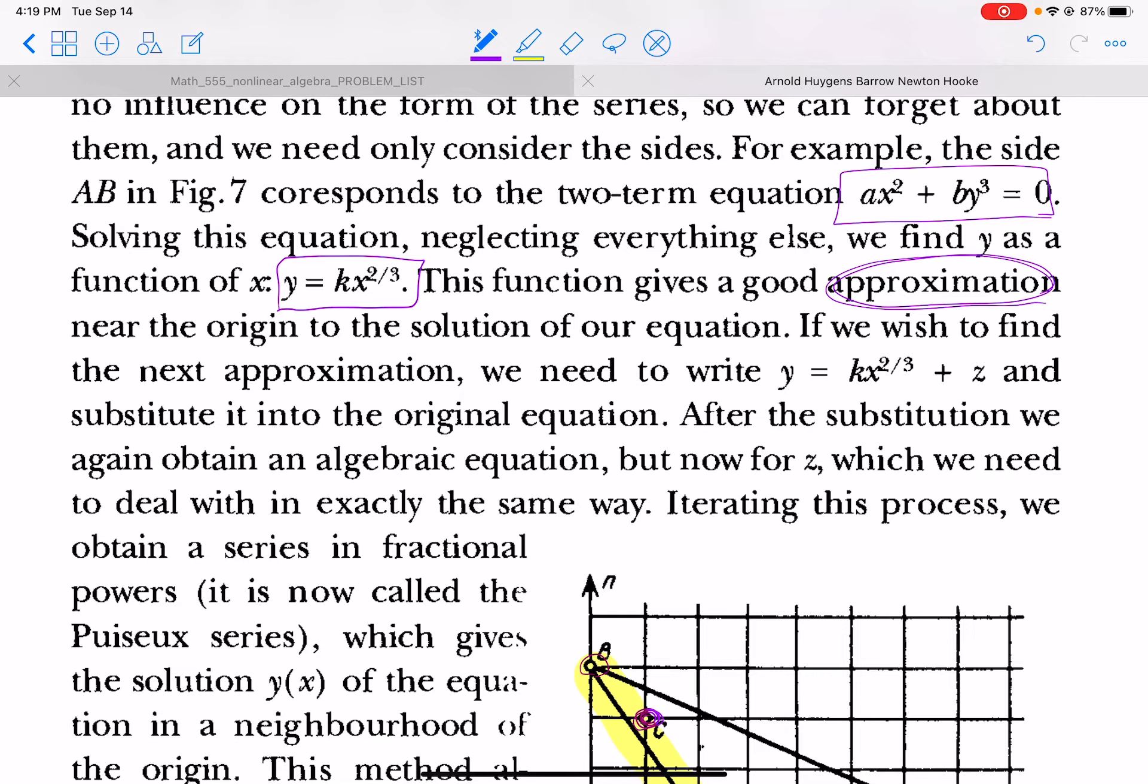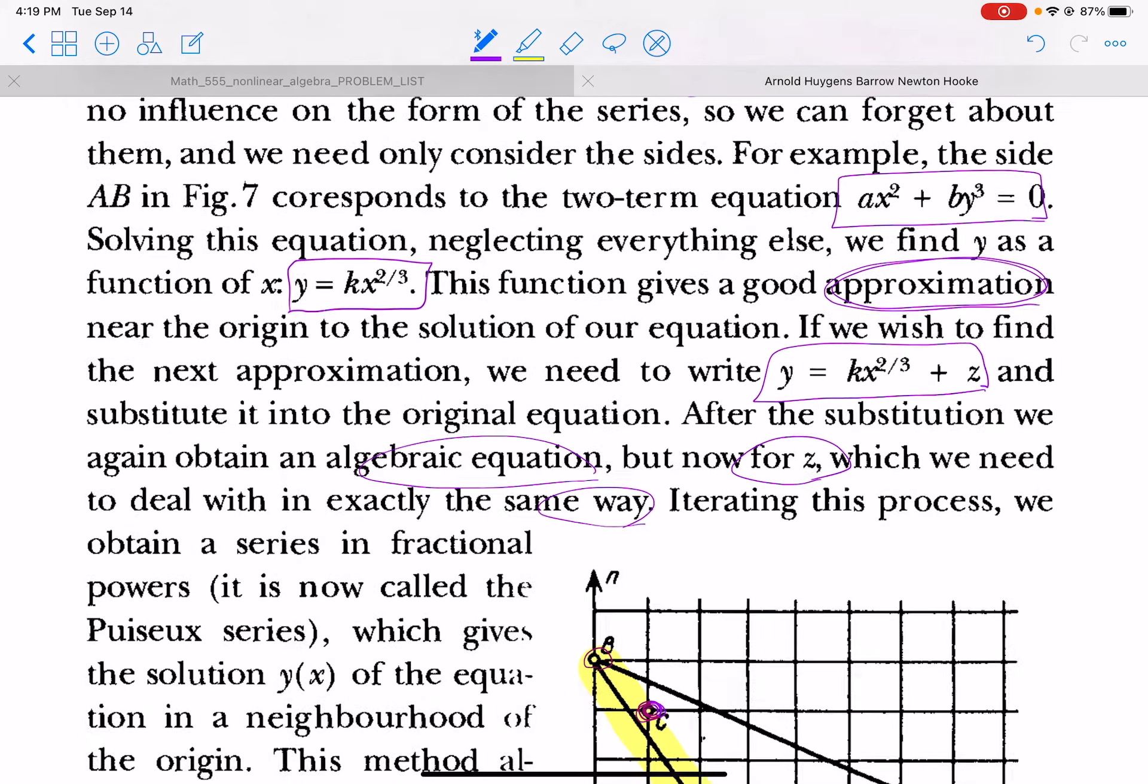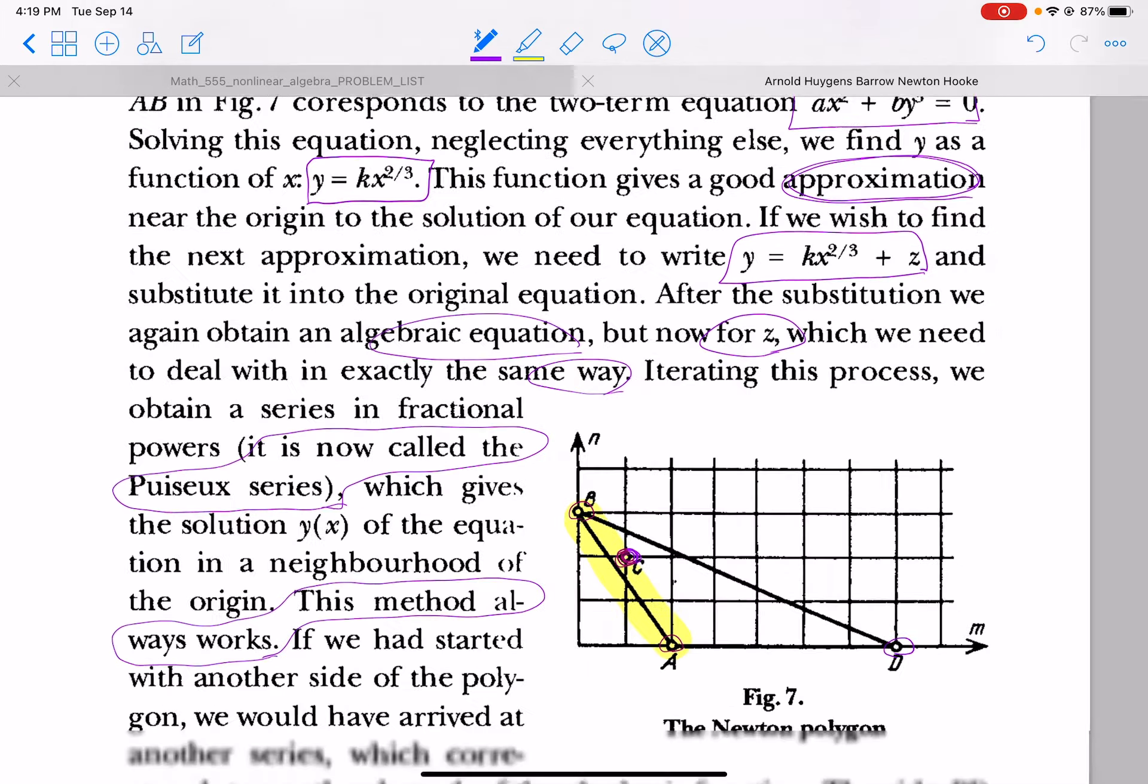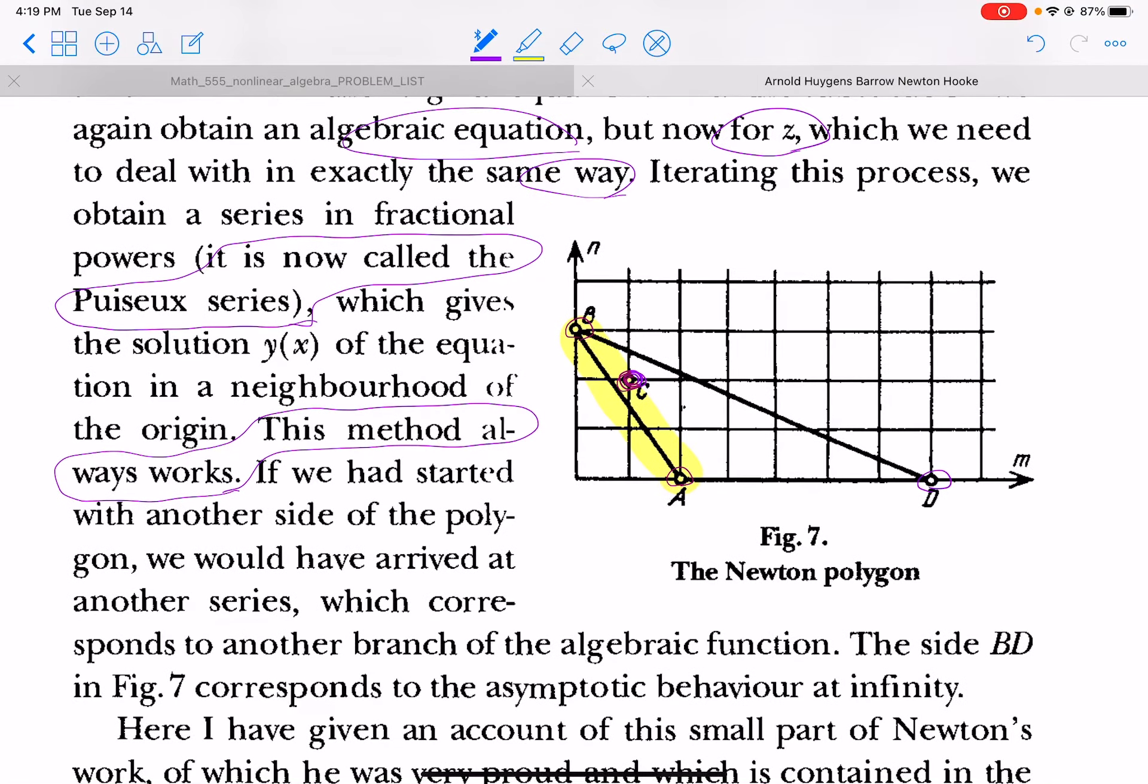We just forget about the other terms because if we go to a side AB, like that side, there's only two terms and so we just forget about the others and we deal with that one. Solving this equation and neglecting everything else, we find y as a function of x. This function gives a good approximation near the origin to the solution of our equation. It's not the solution, right? We threw away two terms, completely ignored them. If we wish to find the next approximation, we need to write this and substitute it into the original equation. After the substitution we again obtain an algebraic equation, but now for z, which we need to deal with in exactly the same way. Iterating this process, we obtain a series in fractional powers. It is now called the Puiseux series, which gives the solution y of x of the equation in a neighborhood of the origin.